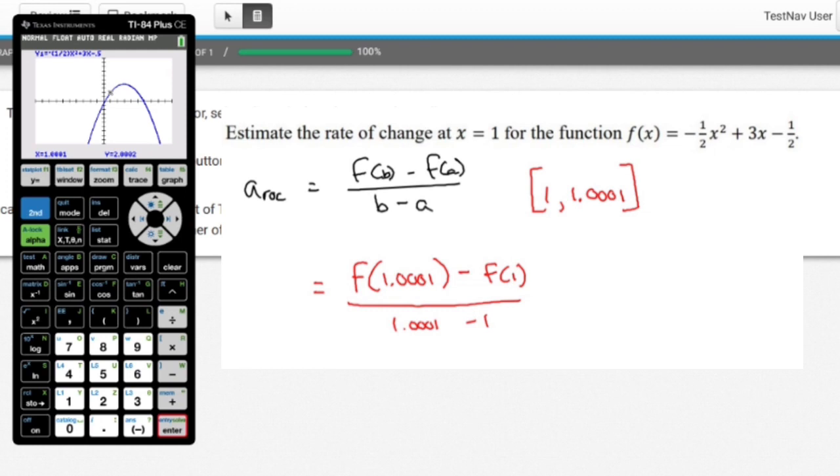Okay. Now, if you remember from the problem, we said that we're going to do f of 1.0001, which is that, minus f of 1. So what's an easy way of finding out what f of 1 is? Go to second table, and there's f of 1. It's 2.